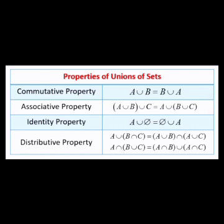Associative property: A union (B union C) is equal to (A union B) union C. Identity property: A union null set is equal to null set union A. Distributive property: A union (B intersection C) is equal to (A union B) intersection (A union C), and A intersection (B union C) is equal to (A intersection B) union (A intersection C).